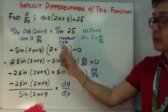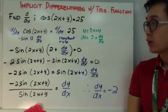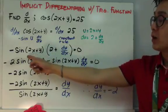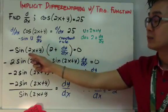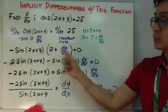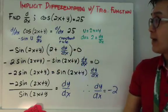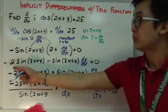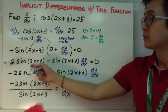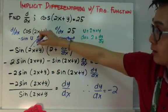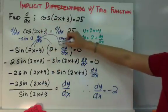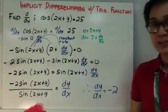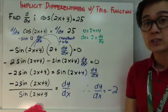Since we need dy/dx by itself, we need to isolate dy/dx. A common error for some students is they don't understand that they can distribute the factor inside the parentheses. If we distribute negative sine(2x+y) to 2, it becomes negative 2·sine(2x+y). And distributing to dy/dx gives negative sine(2x+y)·dy/dx equals zero.